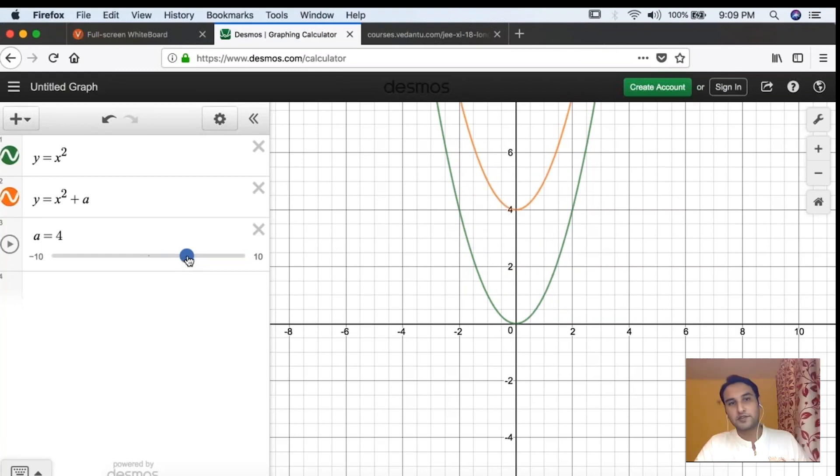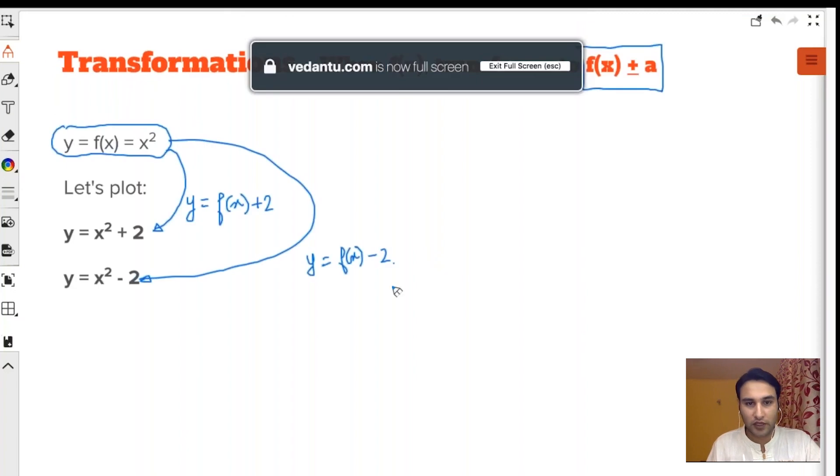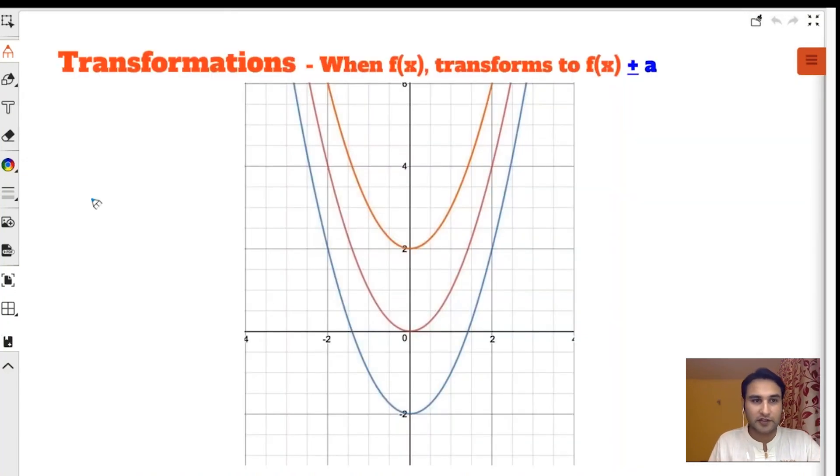That is how the graph transforms, and what do we call it? We call it graph transformation. What type of transformation? Vertical transformation. Let me summarize it for you. Our original graph was y = x², the red one. This one which has shifted up is x² + 2; it has gone up by 2 units.